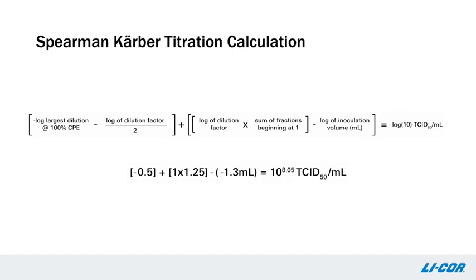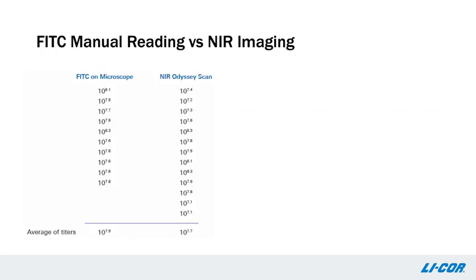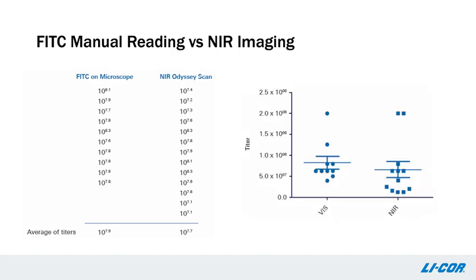Here are the results of the multiple comparisons of FITC-labeled plates manually read using a microscope versus indirect near-infrared labeling and scanning on the Odyssey imager. The results are 10 to the 7.9 TCID50 for FITC and 10 to the 7.7 TCID50 for near-infrared scanning. A two-tailed paired t-test applied to the data confirmed that the differences in the titers between the two methods were not statistically significant.